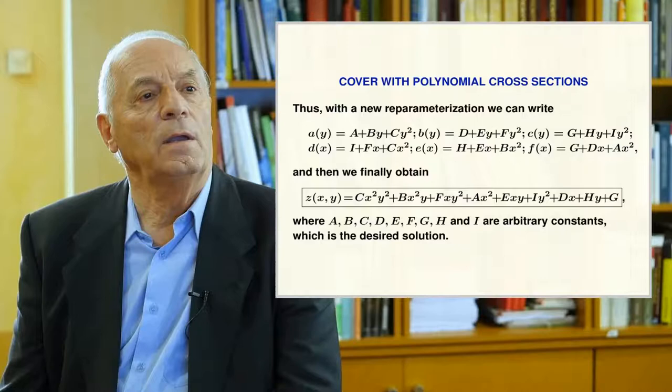Writing and solving the product matrix, we obtain nine equations that express the B unknowns in terms of the A unknowns, so our solution depends on nine parameters. If we re-parameterize — renaming them as lowercase a, b, c, d, e, f, g, h, and i — and use the original column matrices where functions A through F appear, we get the resulting functions which, when substituted into the C function, give us the equation of our second-degree polynomial cover.